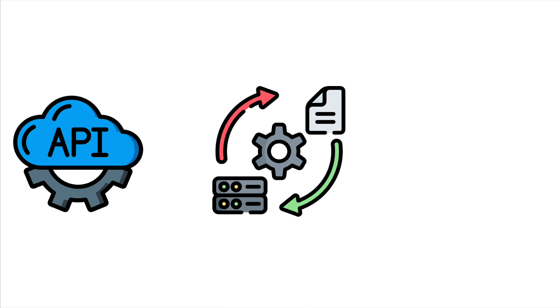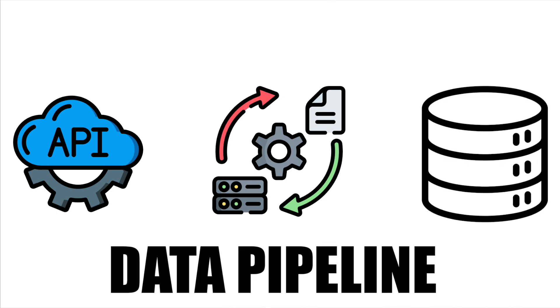Now let's understand the entire process by building a small project. In this demo, I'm going to show you how I would extract data from an API, write some basic transformation job, deploy the data pipeline, and load data into a target location.